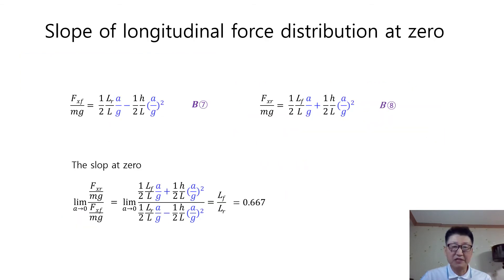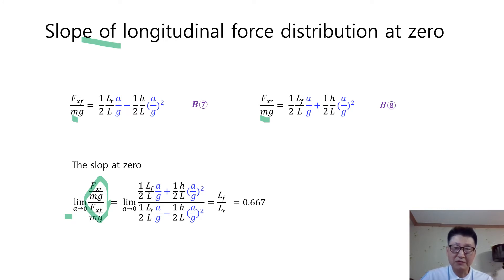Here we have the way to calculate the slope of longitudinal force distribution at 0. There are two equations of front wheel and rear wheel forces. Let's calculate the limit value when the acceleration A approaches to 0 for the equation of the rear wheel force divided by the front wheel force. Then the equation boils down to the ratio of L sub f to L sub r, which is 0.667.